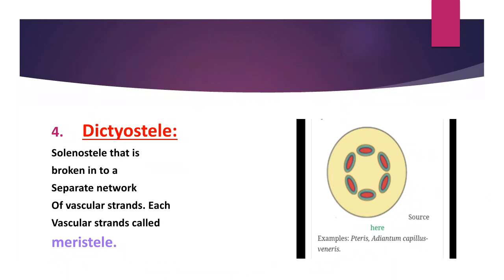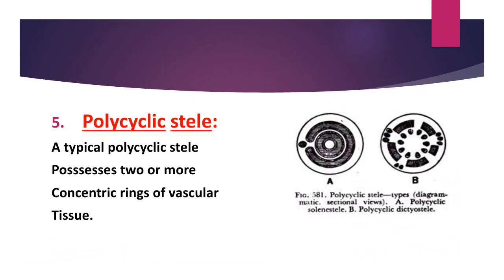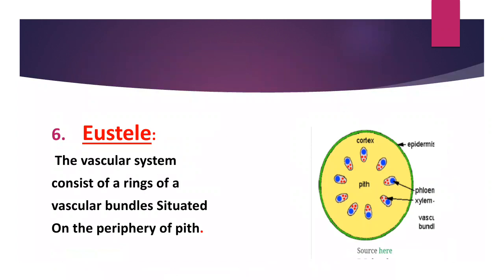Dictyostele: you can see here in the diagram. It is a stele that is broken into a separate network of vascular strands, and each vascular strand is called a meristele. Polycyclic stele: you can see here in the diagram. A typical polycyclic stele possesses two or more concentric rings of vascular tissues — xylem and phloem are formed in the form of rings. Eustele: you can see the diagram showing epidermis, phloem, and xylem. The vascular system consists of a ring of vascular bundles situated on the periphery of the pith.